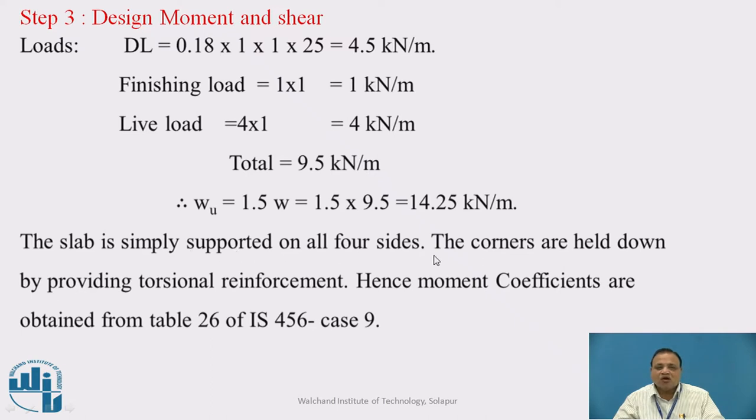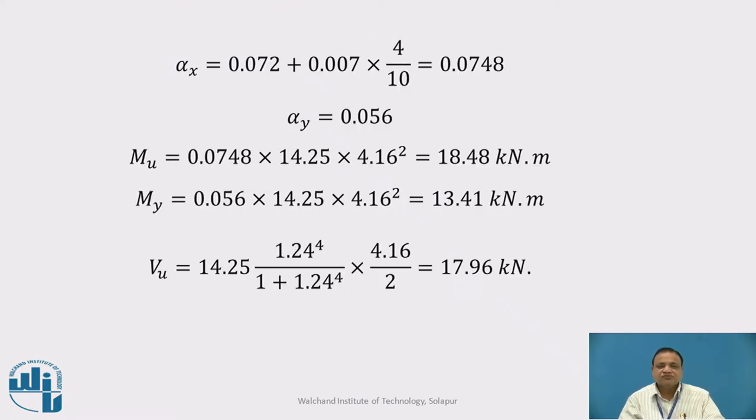The slab is simply supported on all four sides. The corners are held down by providing torsional reinforcement. Hence the moment coefficients are obtained from table 26 of IS 456, case 9. We find alpha X, the coefficient for MUX, and alpha Y coefficient for MUY. Alpha X from table 26 works out to be 0.072. Then interpolating, plus 0.007 times 4 divided by 10, that works out to be 0.0748, which is alpha X.